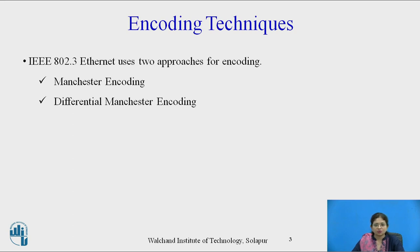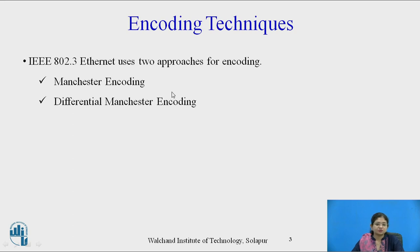There are many encoding techniques such as digital-to-digital, digital-to-analog, analog-to-digital, and analog-to-analog. However, Ethernet uses the digital-to-digital encoding technique. Manchester encoding and differential Manchester encoding are used by IEEE 802.3, that is Ethernet.